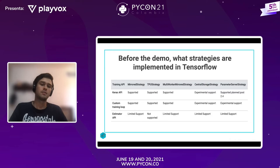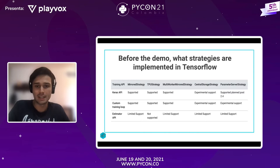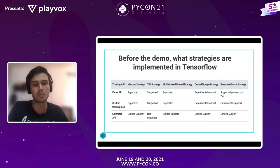Ahora sigue la segunda parte de la charla, en la cual les voy a mostrar cómo implementar estas estrategias de distribución en TensorFlow. Antes de hacer esto quiero mostrar cómo están implementadas las estrategias. Hay tres opciones para entrenar modelos: el API de Keras, un training loop que uno cree, o un estimador de TensorFlow.